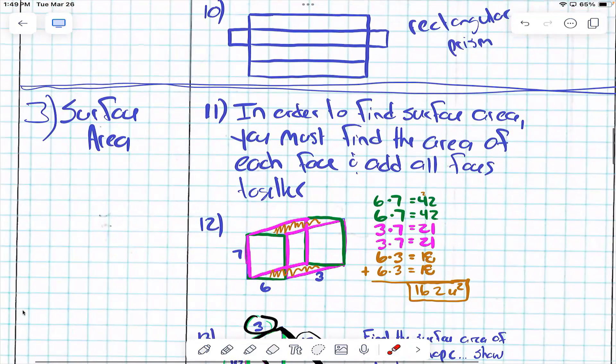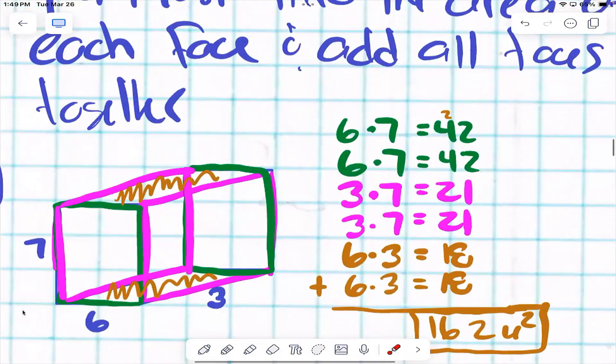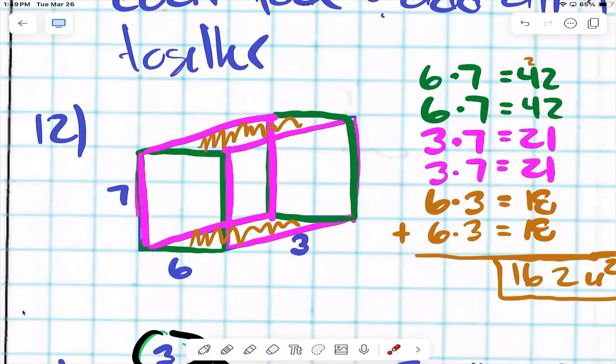Surface area. In order to find surface area, you must find the area of each face. This is a rectangular prism, otherwise known as a Kleenex box. Is this a face? Yeah. Is the face back here? Yeah. How many are you up to right now? Two.